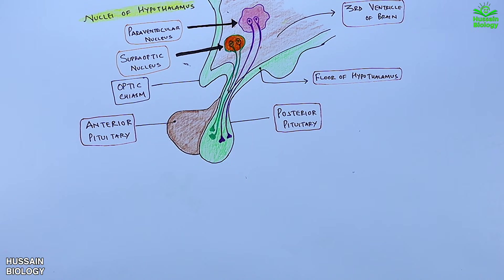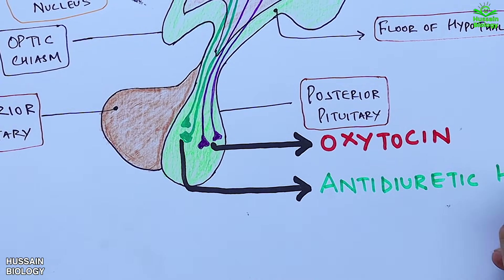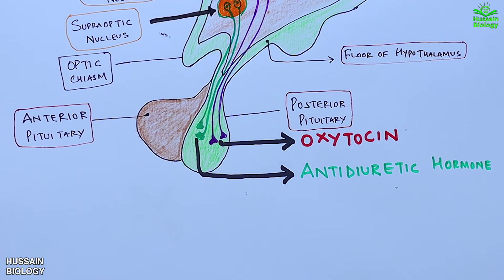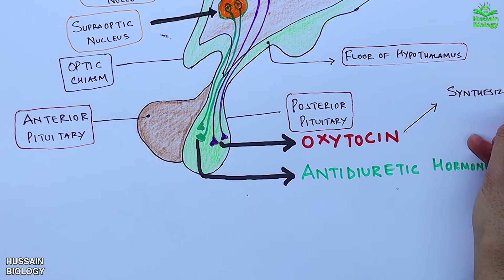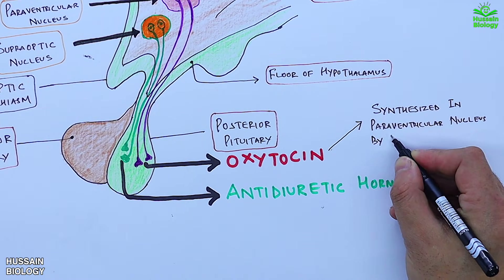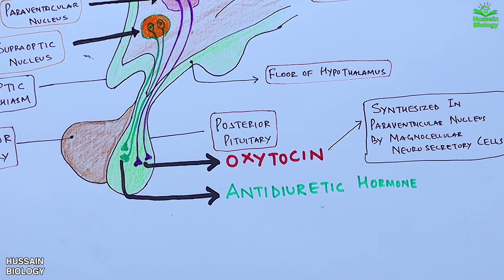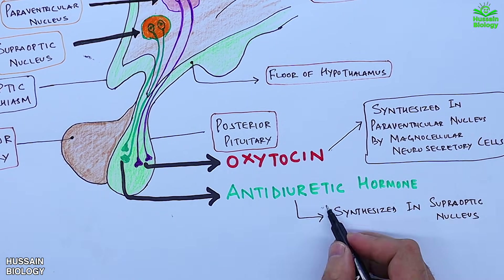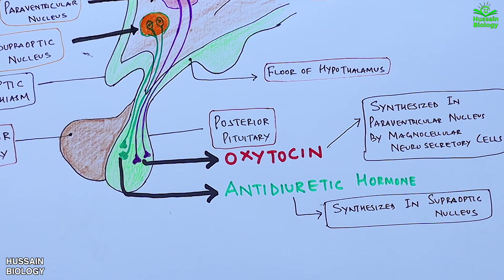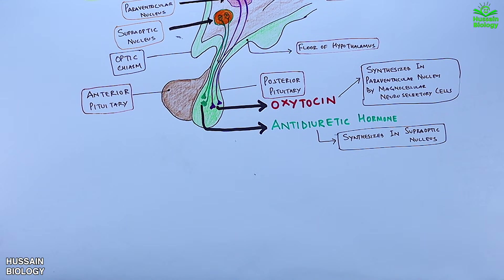The posterior pituitary releases two hormones: oxytocin and antidiuretic hormone. Oxytocin is actually synthesized in the paraventricular nucleus of the hypothalamus by magnocellular neurosecretory cells and then stored in the posterior pituitary. Similarly, antidiuretic hormone or vasopressin is synthesized in the supraoptic nucleus of the hypothalamus and then stored in the posterior pituitary. So the posterior pituitary only stores and releases hormones it receives from the hypothalamus.